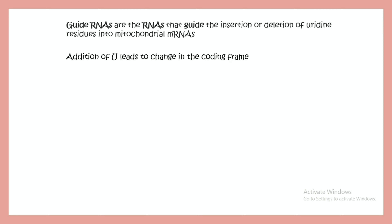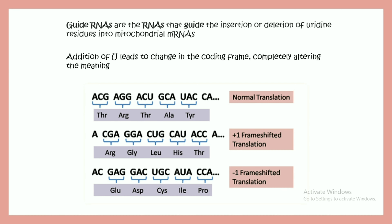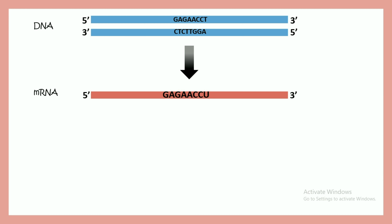The addition of uracil leads to a change in the coding frame — a frame shift of plus one or minus one. This changes the message inside the mRNA, so the blueprint is changed and the ultimate protein product is also changed.